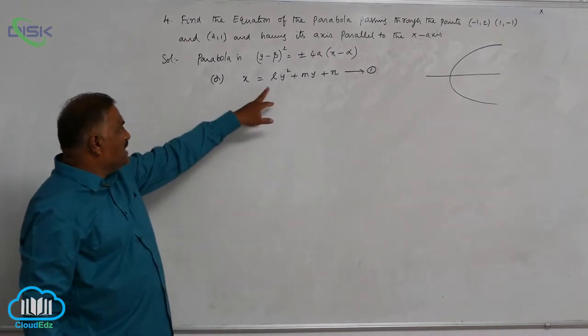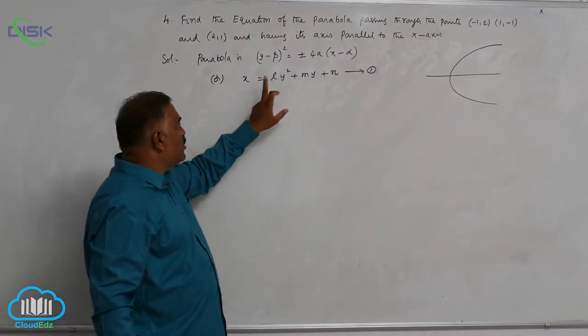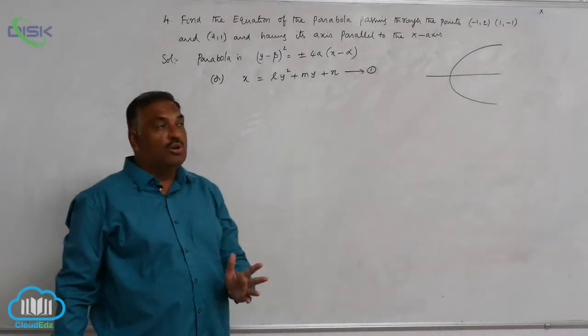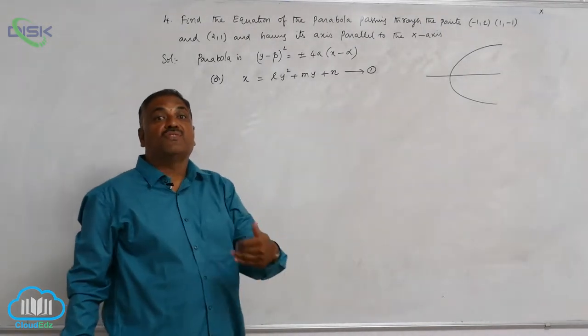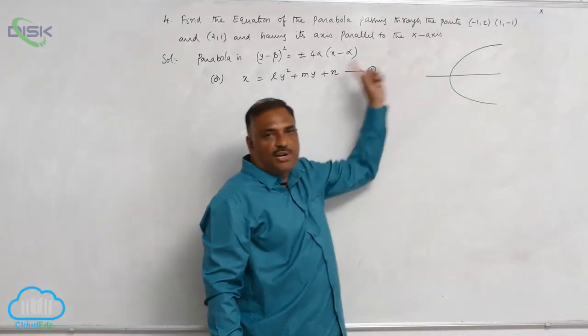Now, this equation contains 3 unknowns l, m, n. I already told you that you require a minimum of 3 conditions. So, 3 points are given to you.